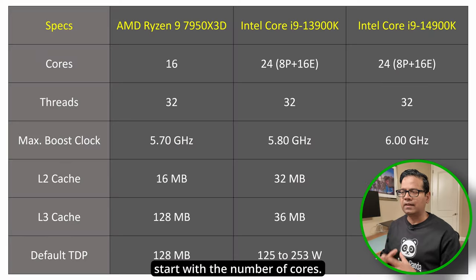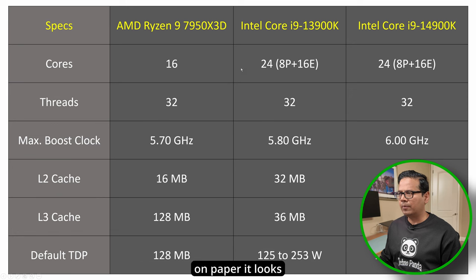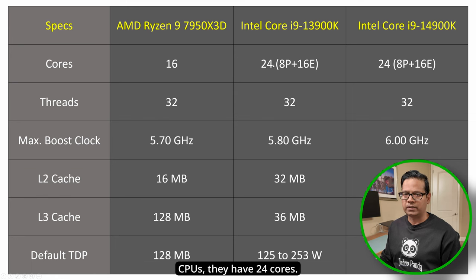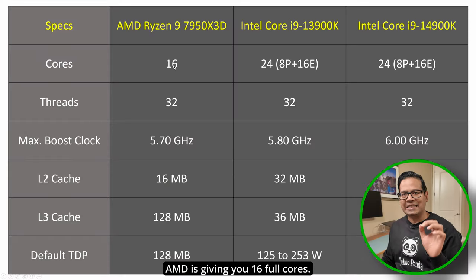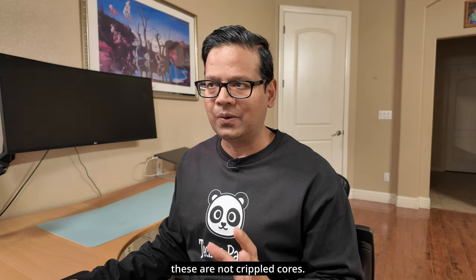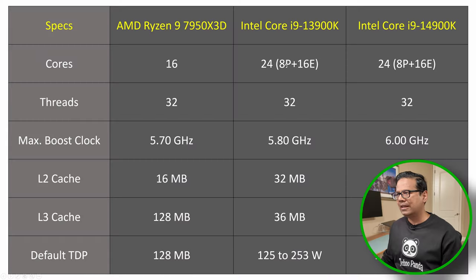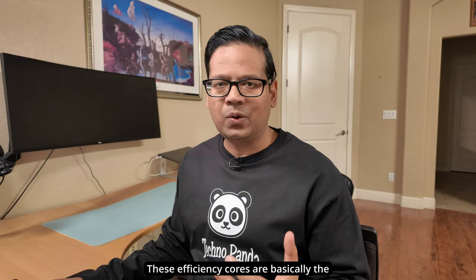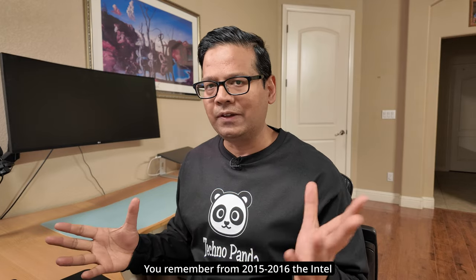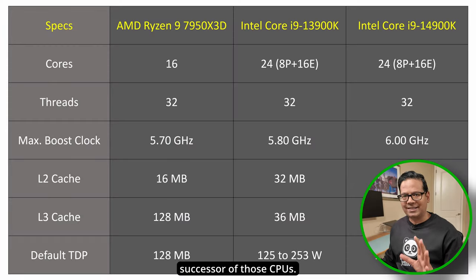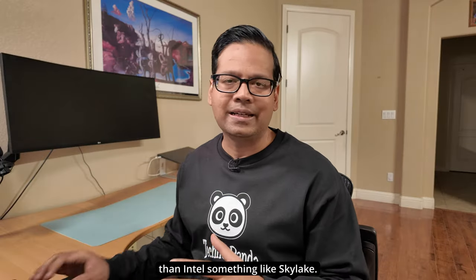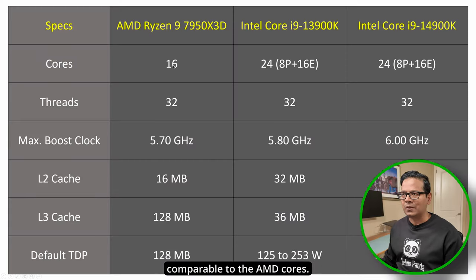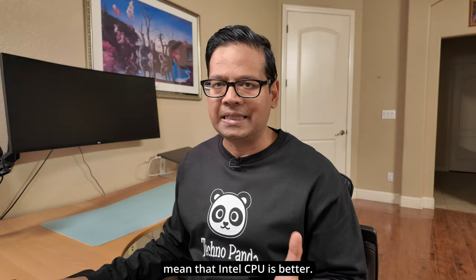Let's compare these CPUs starting with core count. The AMD Ryzen 9 has 16 cores, which on paper looks much weaker than the Intel counterparts, because both the 13th and 14th gen Intel CPUs have 24 cores. But the devil is in the detail. AMD is giving you 16 full Ryzen cores — these are not crippled cores. Intel, on the other hand, is only giving you 8 performance cores and 16 efficiency cores. These efficiency cores are basically successors to those old Atom CPUs like Goldmont and Gracemont from 2015-2016. Their performance is better than Intel Skylake, but they are nowhere comparable to the AMD cores. So having more cores doesn't automatically mean the Intel CPU is better.